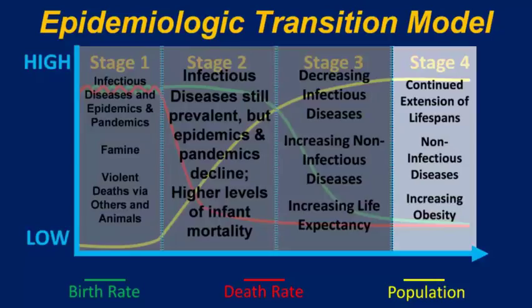Finally, in stage four countries we see continued extensions of lifespans — people living longer. Infectious diseases are very rare. You might see cases like mumps or tuberculosis on a college campus, but for the most part, non-infectious diseases explain how people die in stage four countries.